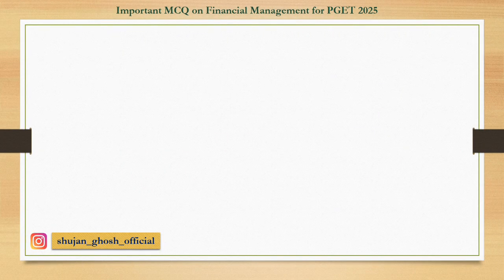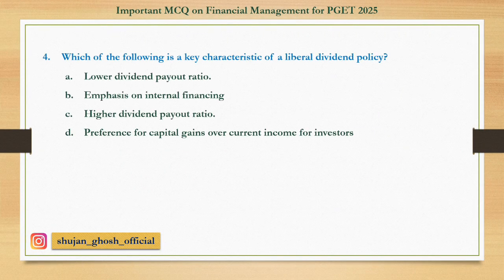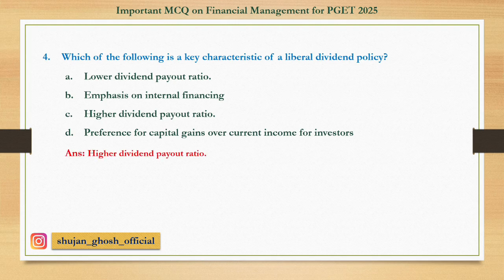Question number four: Which of the following is a key characteristic of a liberal dividend policy? Option A: lower dividend payout ratio. B: emphasis on internal financing. C: higher dividend payout ratio. D: preference for capital gains over current income for investors. As the name suggests, a liberal dividend policy means they distribute most of their dividend and retain only a lesser amount. Answer: higher dividend payout ratio — they distribute most of their profit as dividend.